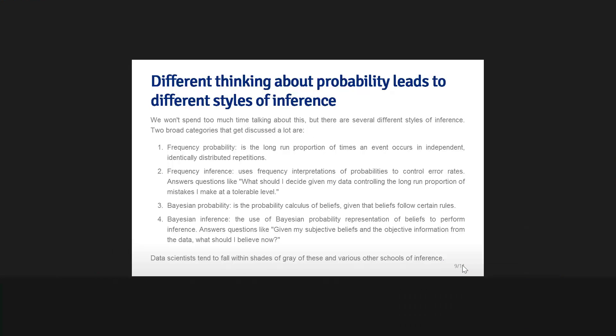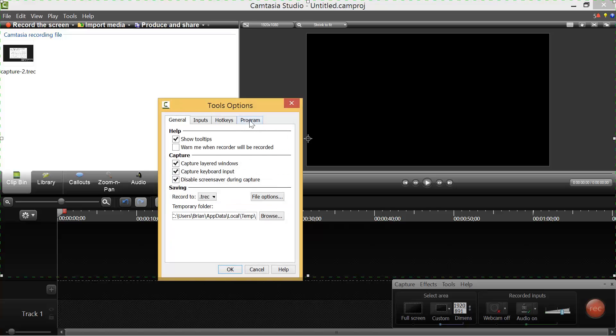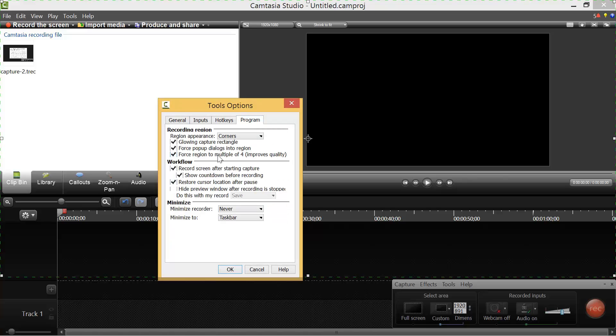go to Tools, Options, Program, and set Minimize Recorder to Never. That will keep your recorder always on top and not minimized after you press the Record button.